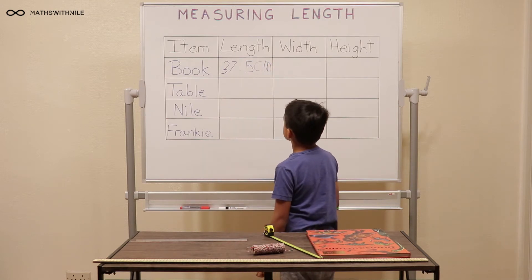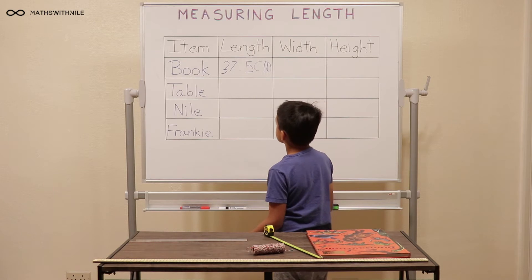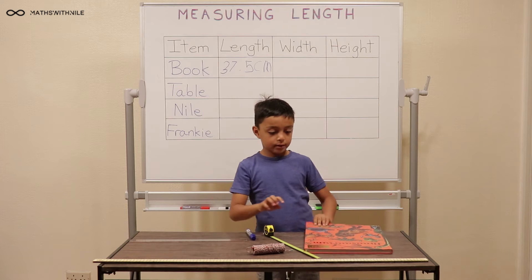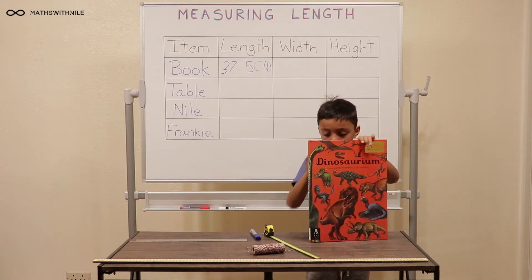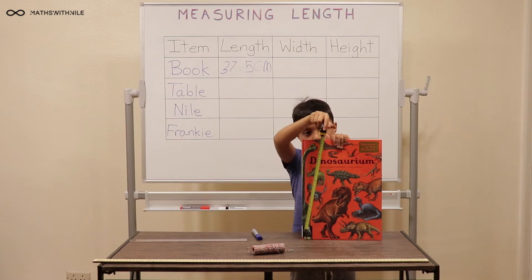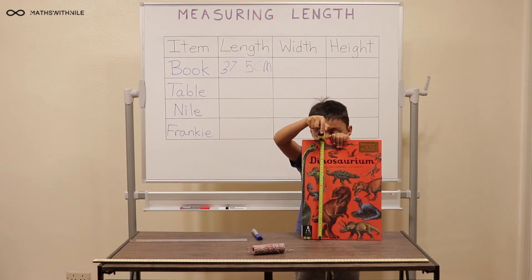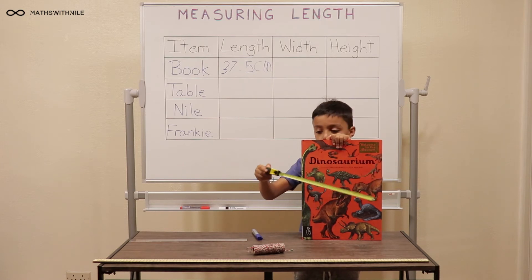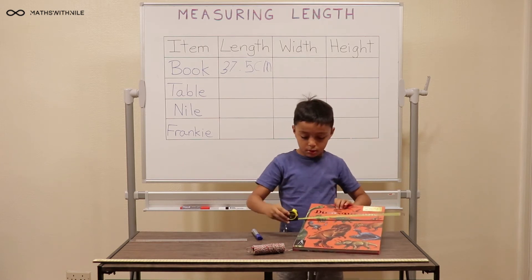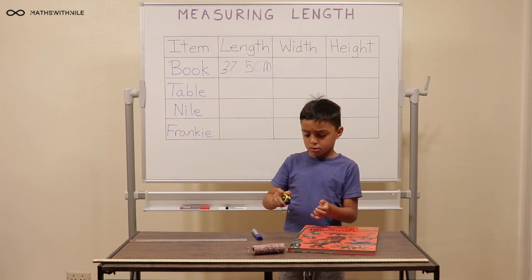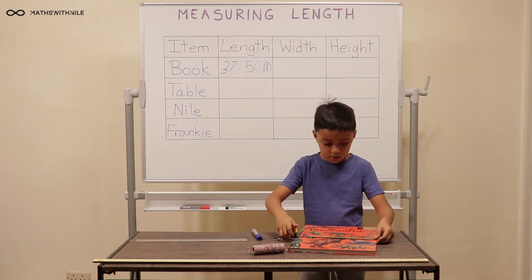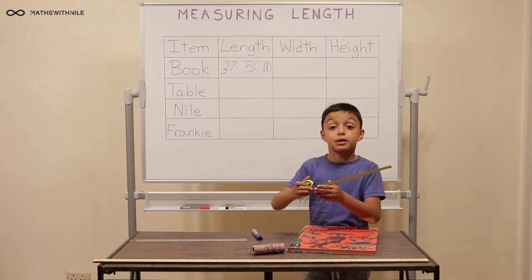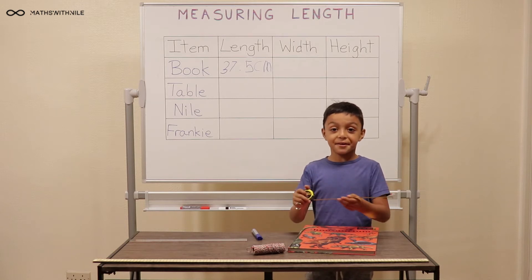Can you lift the book up so we can see it and show us the length of the book that you just measured? Put the book to face us. Here's the book. So you measured the length. So now you're going to measure the width. Where's the width of the book? This. So put it back down. It is exactly 28 cm across.